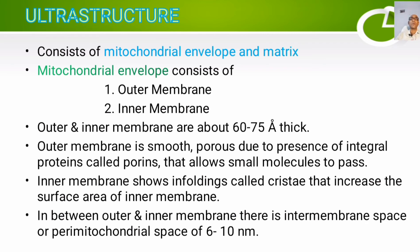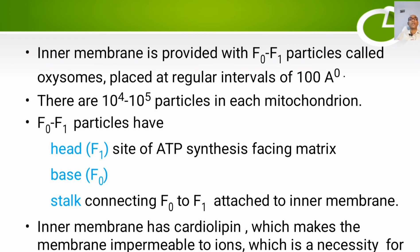In between the outer and inner membrane there is an intermembrane space, also called peri-mitochondrial space. The inner membrane is provided with F0F1 particles called oxysomes, placed at regular intervals of 100 angstroms. In chloroplasts, these are written as CF0CF1 particles, but here they are called oxysomes. There are around 10⁴ to 10⁵ such particles in each mitochondrion.